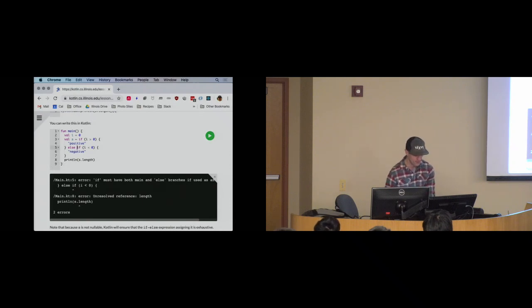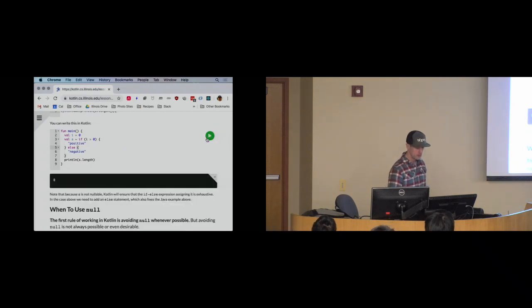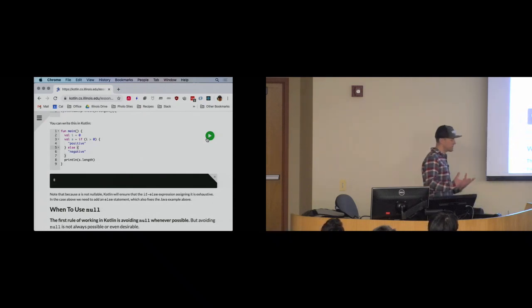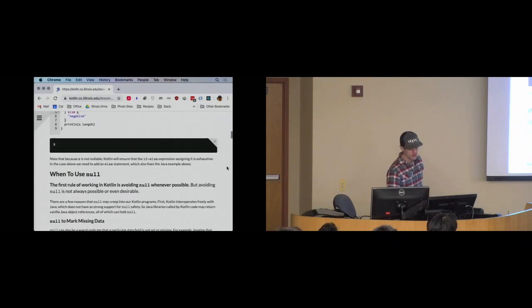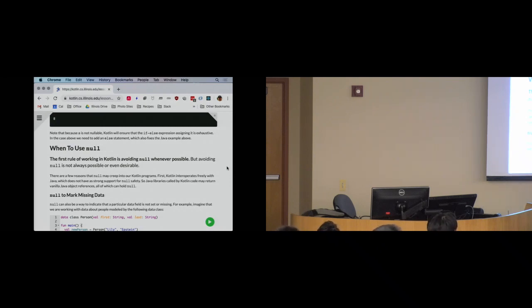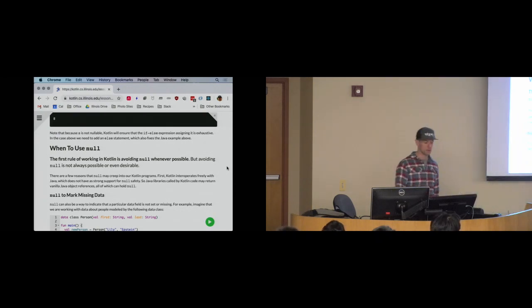Kotlin could have said, 'If you don't hit either branch, I'll let S be null and infer its type as a nullable string.' But it didn't do that. The way to fix this is to make sure I hit one of the branches so that S is not nullable. When working with null in Kotlin, first think about whether you can rewrite your code to avoid null.